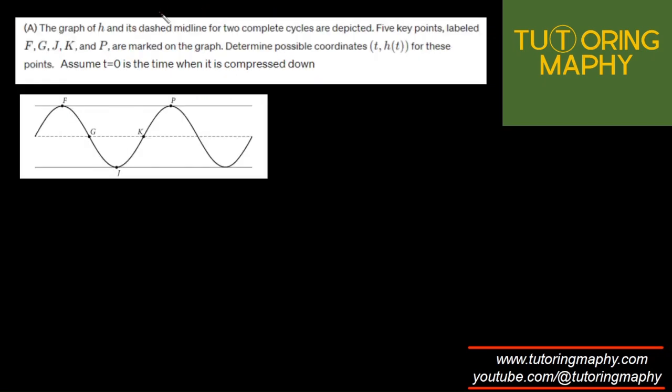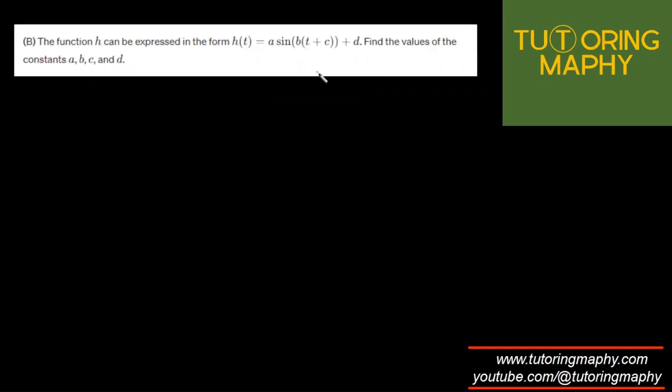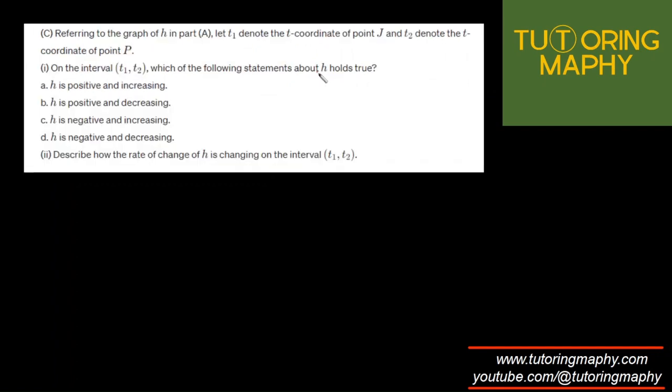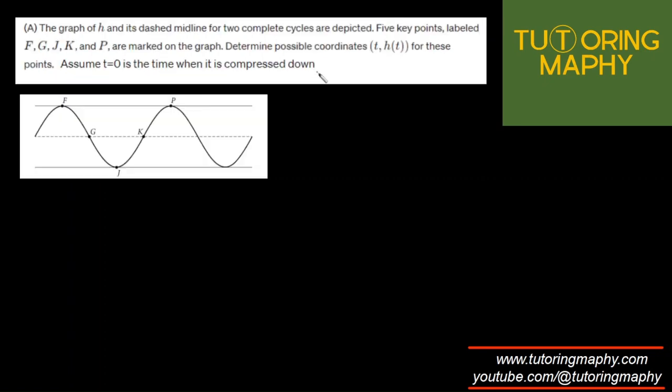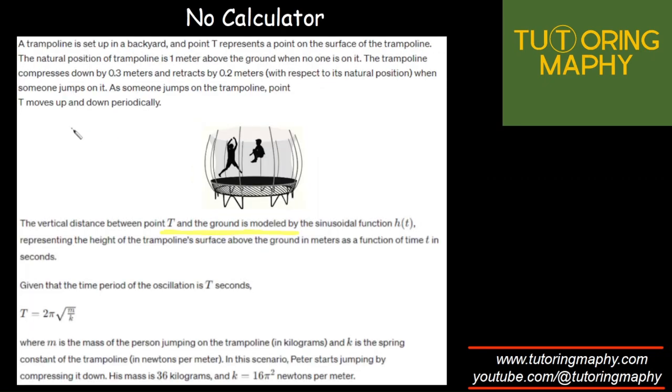What are the questions? We have to mark F, G, J, K, P as the trampoline goes up and down, where t equals 0 is the time when it is compressed down. Model a sinusoidal function and answer some related questions to the function's graph. Let's set up the groundwork first.